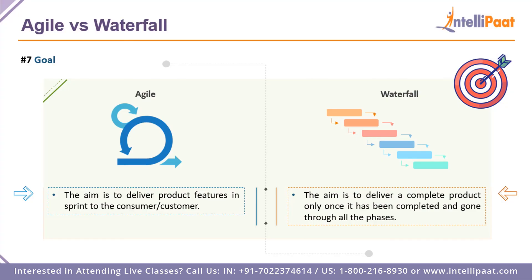On the end goal: for agile, the end goal is to deliver product features in sprints to the consumer to increase business value and ensure customer satisfaction. Whereas in waterfall, the aim is to deliver a complete, polished product only once it has been completed and gone through all the phases — giving the final product to whoever requires it.